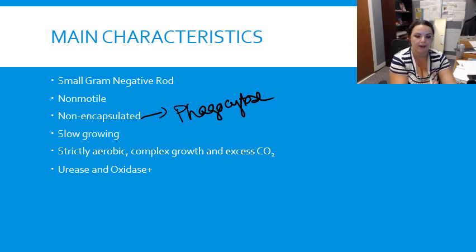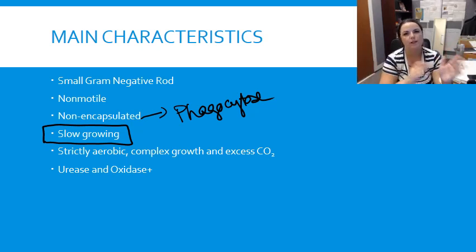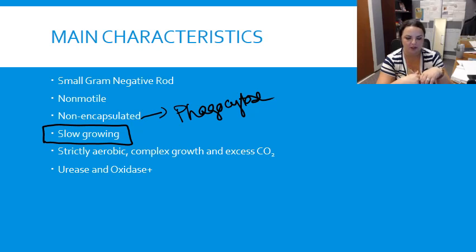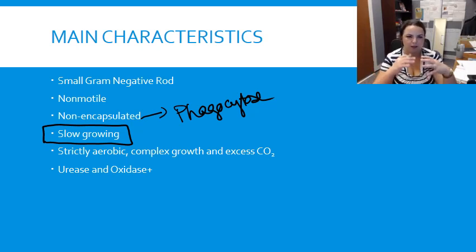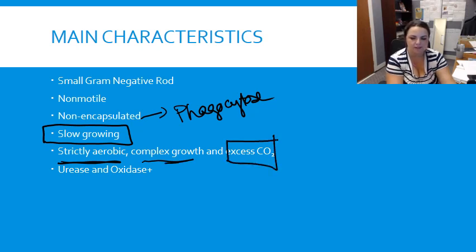It's very slow-growing, and that can be somewhat problematic because slow-growing means we have a longer period of time to wait before we can diagnose the causative agent. It's also a strictly aerobic organism with very specific growth requirements — it requires an excess of CO2.